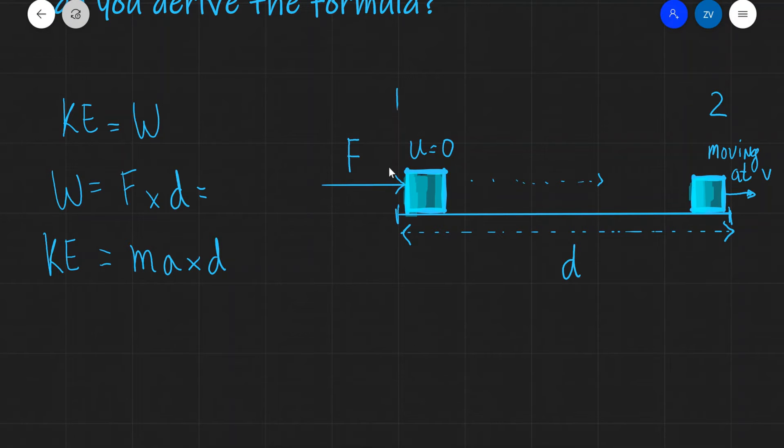Because the object is accelerating from position one to position two, I can use the SUVAT equations to see if I can determine what the product of the acceleration and the distance is. The equation which I'm going to use is that v squared is equal to u squared plus 2ad.